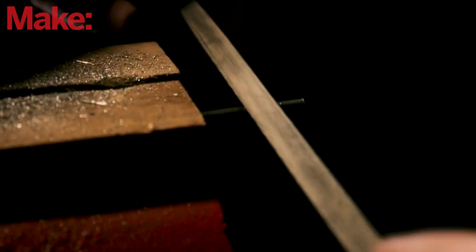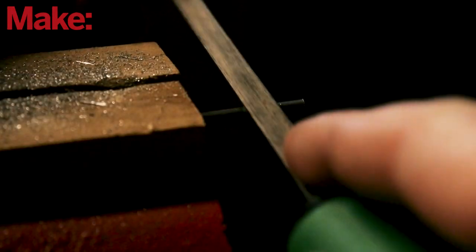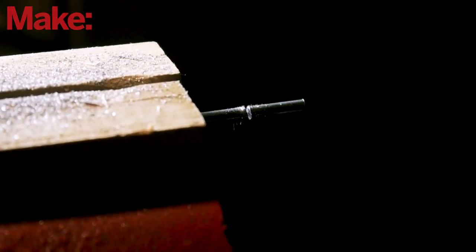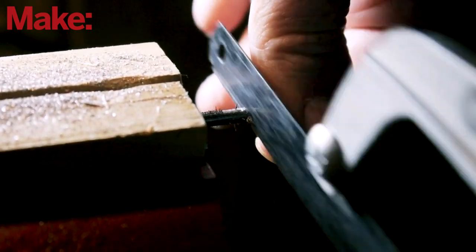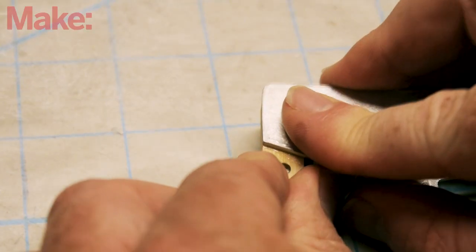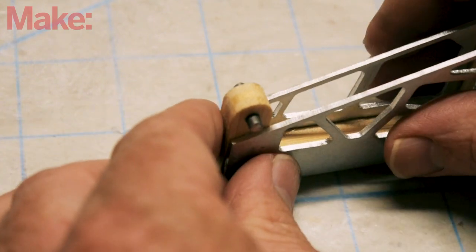While waiting for that to cure, I cut a short length of 1/8 inch steel rod to use as the hinge pin. I fit it through the hole in the cap and use it to align the bottom plate and the body.